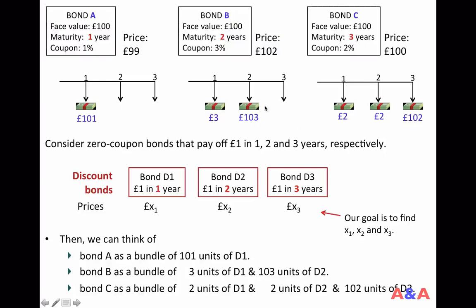The main idea is that you can think of these 3 coupon bonds as bundles of discount bonds. If you own Bond A, you receive 101 pounds in 1 year — the same as owning 101 units of Bond D1. The cash flow from Bond B is replicated by owning 3 units of Bond D1 and 103 units of Bond D2, giving 3 pounds in 1 year and 103 pounds in 2 years. The cash flow from Bond C is replicated by 2 units of D1, 2 units of D2, and 102 units of D3.